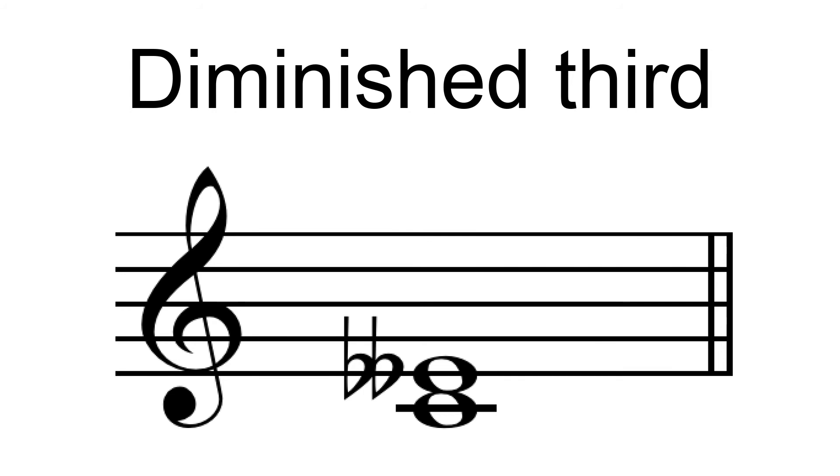The just diminished third arises in the extended C major scale between F-sharp and A-flat, and between B-sharp and D-flat.